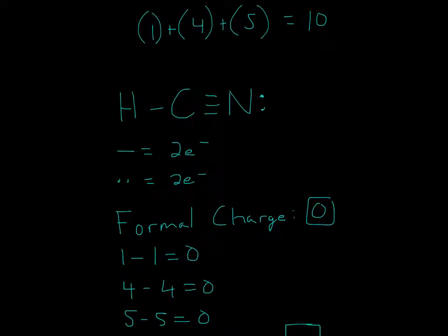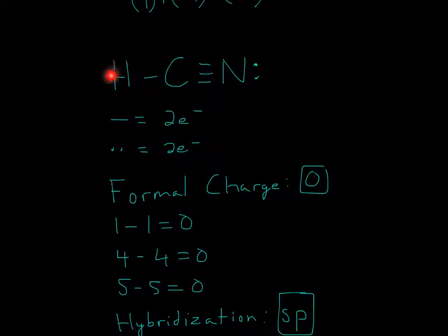So for formal charge, for example, the hydrogen, since we count a dash as 1 for formal charge, we can do 1 minus the group number, which is 1. So 1 minus 1 is equal to 0.